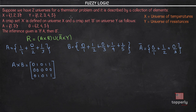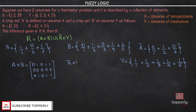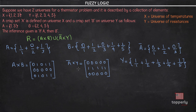We also express universe Y in Zadeh's notation: listing elements 1, 2, 3, 4, and 5, all having membership value 1 since all elements belong to universe Y. So we have A-bar cross Y. Now that we have found the Cartesian products A cross B and A-bar cross Y, we can substitute into relation R using the union operation.